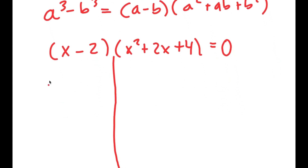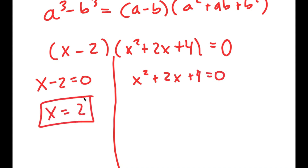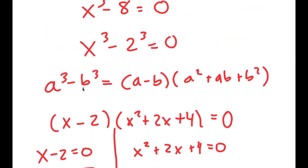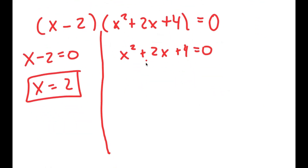So now I get two equations: x minus 2 equals 0, and x squared plus 2x plus 4 equals 0. For x minus 2 equals 0, I get x equals 2, which was a solution that we already got. But now on top of this, we have a whole other equation with two more solutions, because it's a quadratic equation.